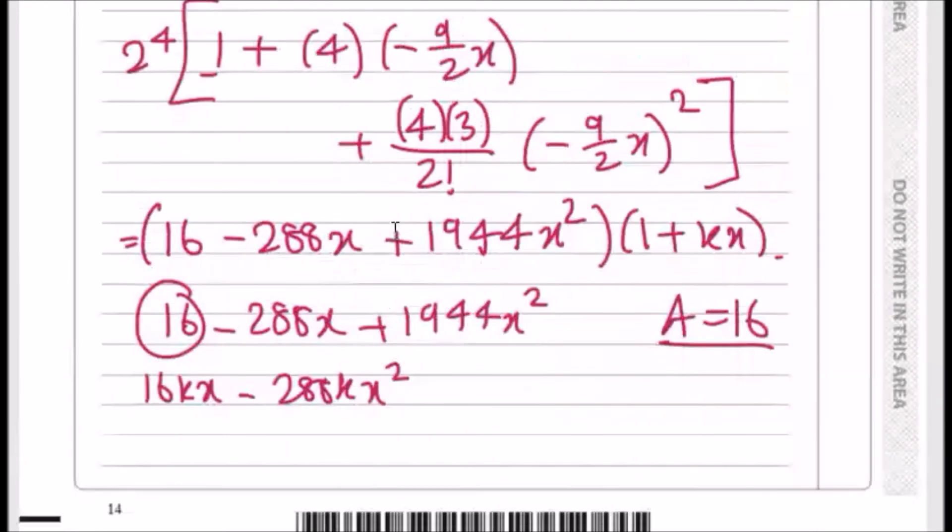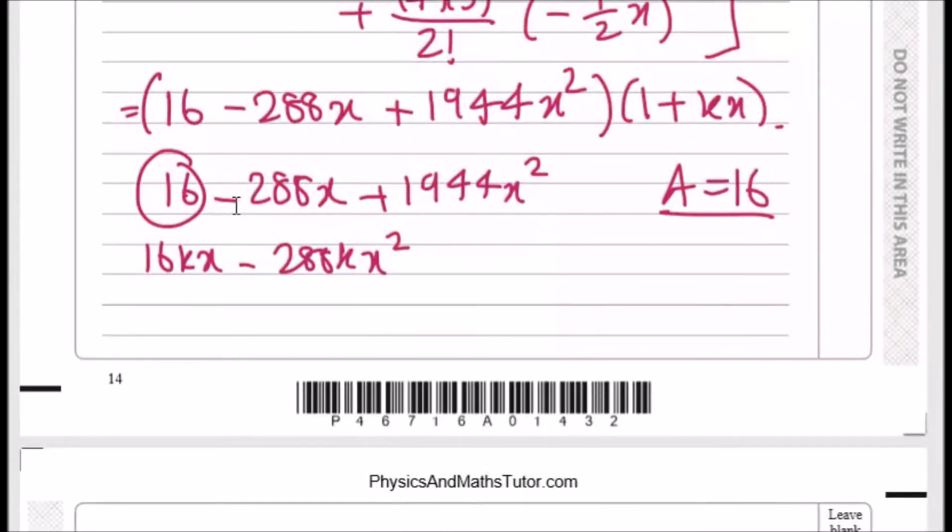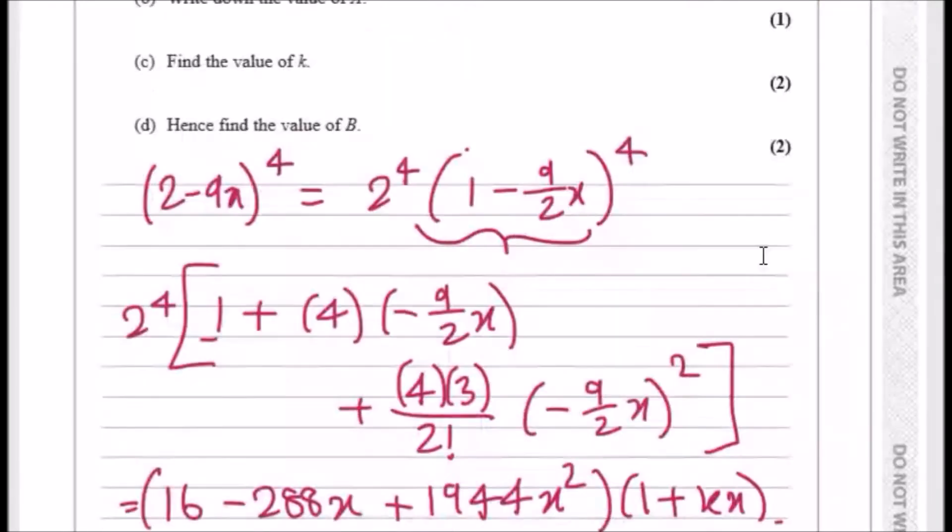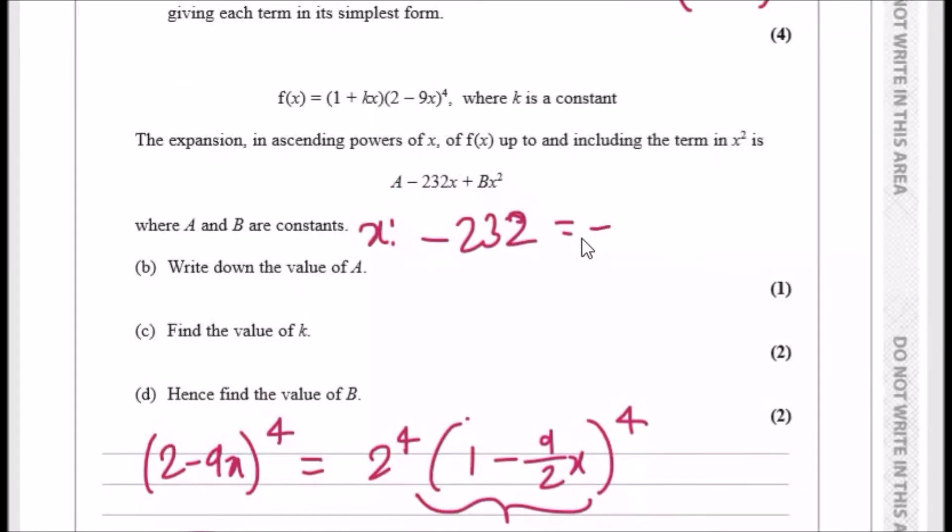The next bit in terms of x's, we can say that minus 232x is equivalent to minus 288x and 16kx. So writing as an equation, we could say minus 232 in terms of x's is equivalent to minus 288 plus 16k. And now you just have to solve this and make k the subject. So doing this and making k the subject, you should basically get 7 over 2. So just plus 288 and then divide by 16.